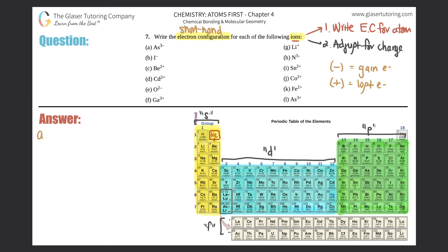A: they want the electron configuration for As³⁻. First, write the electron configuration without the charge, then adjust. Arsenic is over here. I'm going to do shorthand, so you always start by stating the noble gas preceding it. Your noble gas group is here — the noble gas in this case is argon. By putting it in parentheses you're stating that you have the same electron configuration up until argon, up until the 18th electron. Then you continue following the atomic number, moving to number 19.